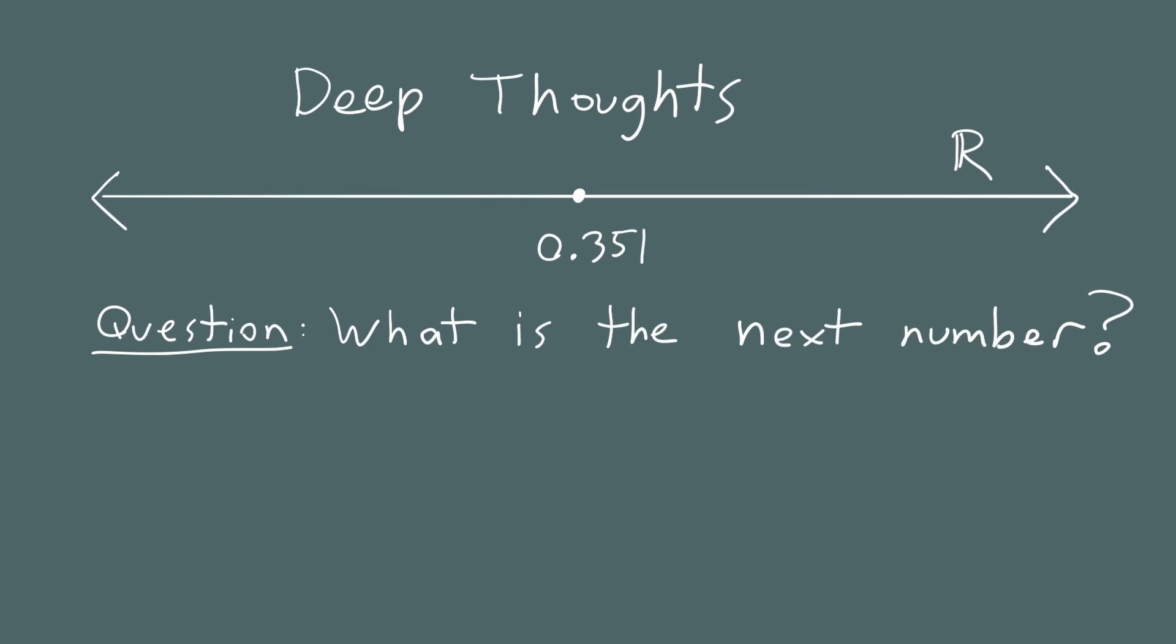That's another interesting feature of real numbers. No matter what two numbers you pick, let's say we pick 0.352, the number of numbers between these two numbers is also infinite. You can see that because if you take the average of these two numbers, you would get a number halfway between them. You could then take the average of the first and second points, and then the average of the second and third points, and continue this process over and over again. In that way, you could see that there is an infinite number of numbers between any two numbers on the real number line, no matter how close they are to one another.